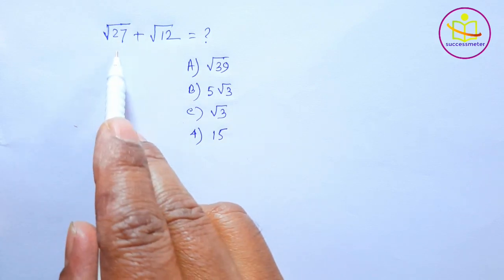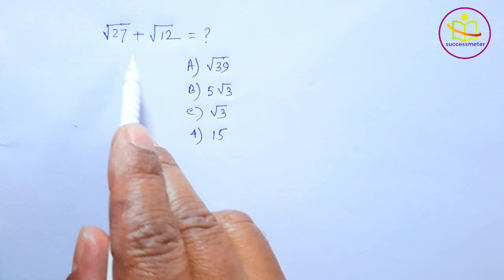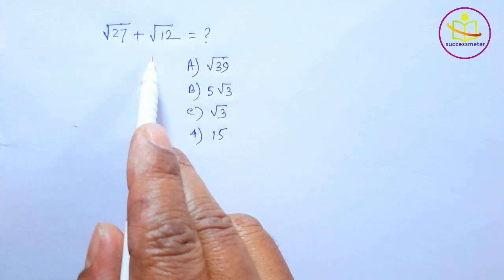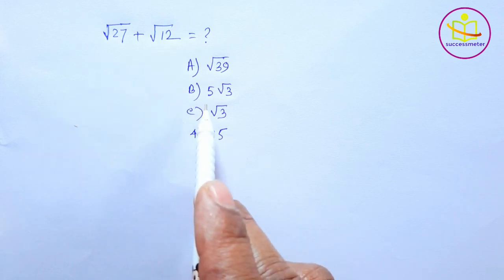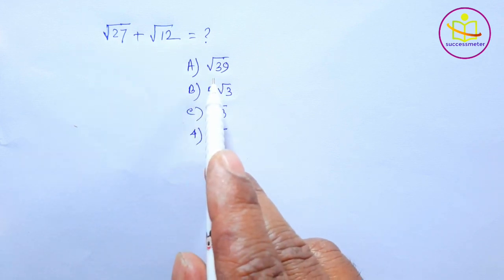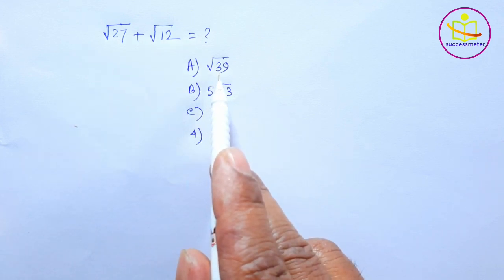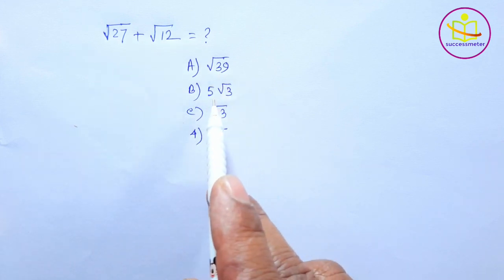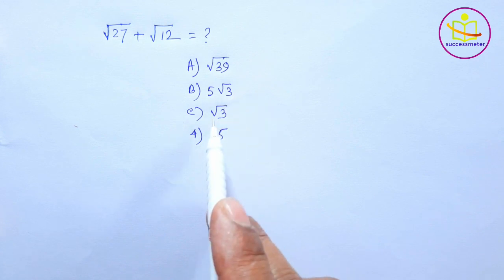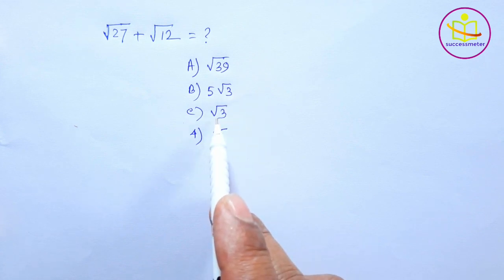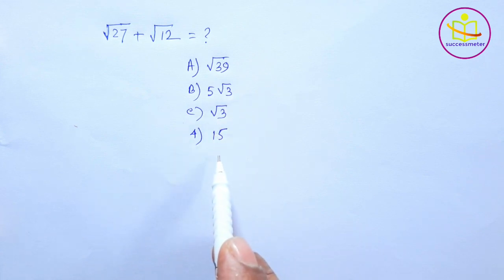Find the value of square root 27 plus square root 12. The four options are: square root 39, 5 square root 3, square root 3, and 15.